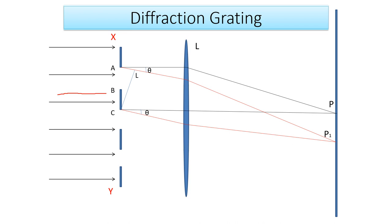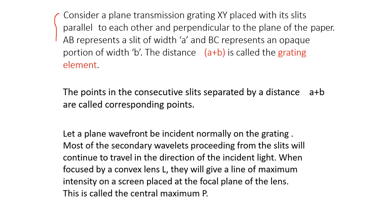Let a plane wavefront be incident on the grating normally. Most of the secondary wavelets proceeding from the slits will continue to travel in the direction of the incident light. When focused by a convex lens L, they will give a line of maximum intensity at the center of the screen P, and this is called the central maximum. In the second part of the essay, give a description of the figure and mention about the grating element and corresponding points — both are very important.